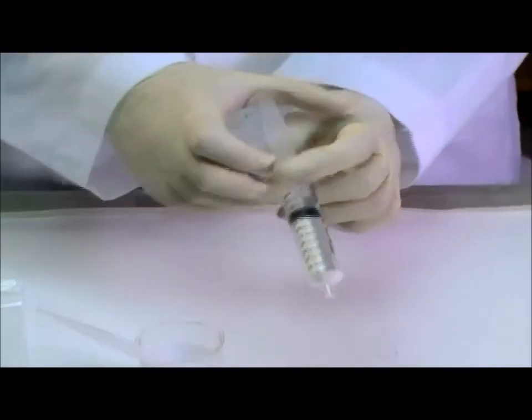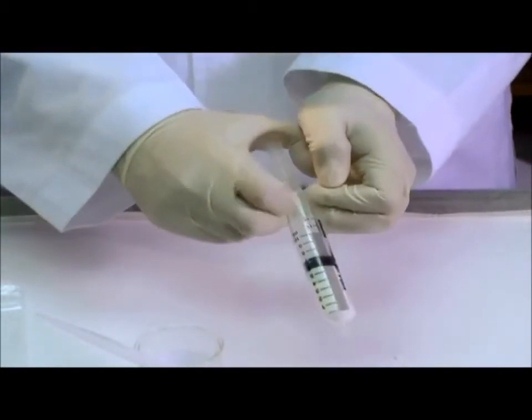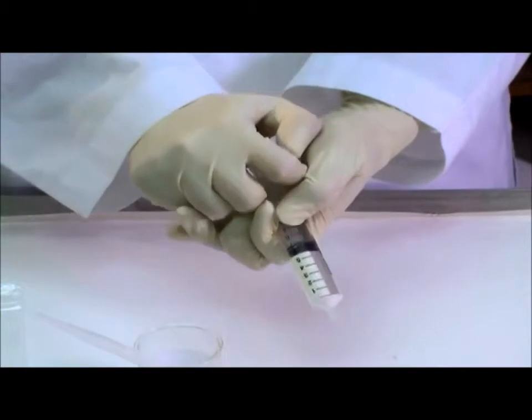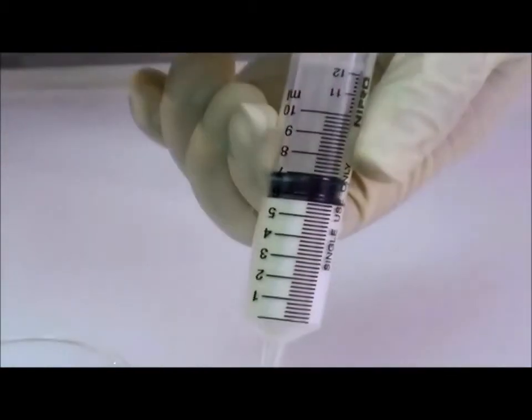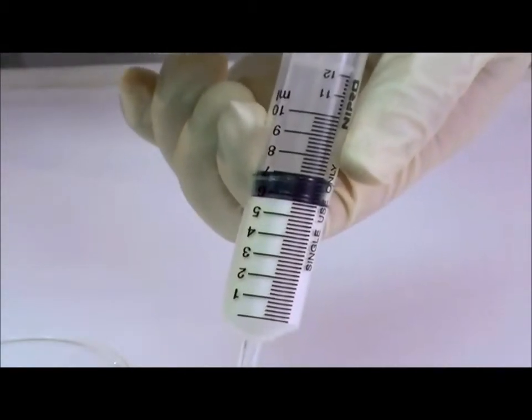Insert the plunger and pack the CF-11 powder down as far as possible to approximately the 5.7 milliliter mark. Add more powder to reach this level if necessary.